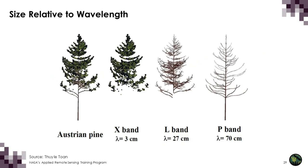Here is an example of size relative to wavelength. At X-band with a wavelength of around 3 centimeters, we're looking at vegetation components around that size. At L-band around 27 centimeters, we're looking at branches and twigs. At P-band with an even longer wavelength, we're looking at larger components like longer branches and trunks.